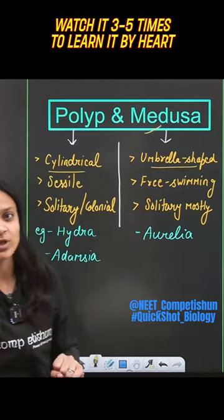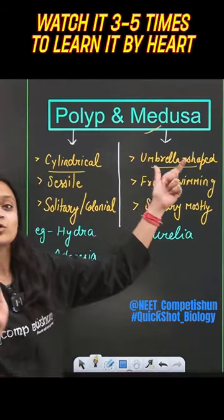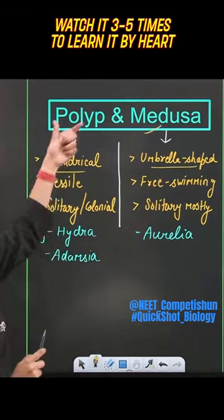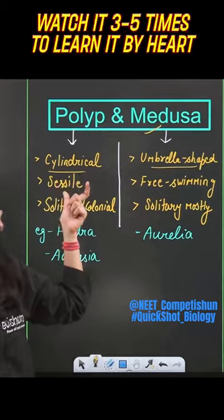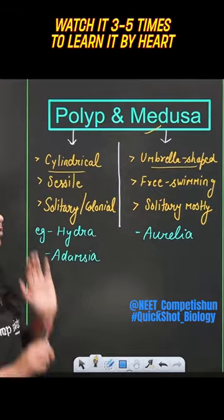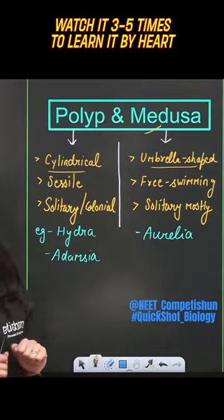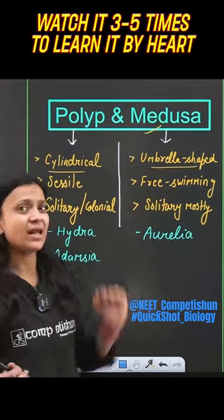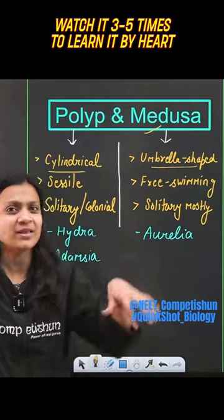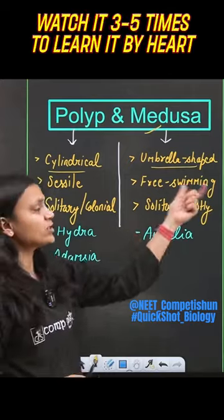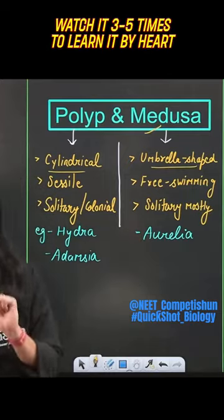What is the difference between polyp and medusa? Polyp, which is a cylindrical form, generally stays on its base. When the umbrella-like jellyfish stays in water, medusa is the free-swimming form.